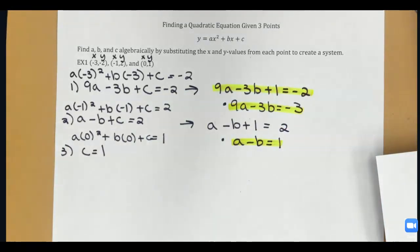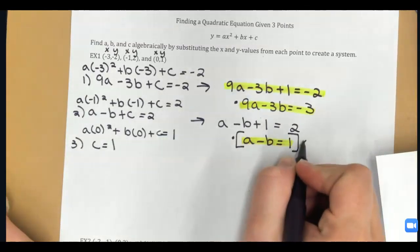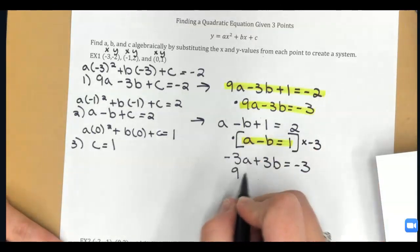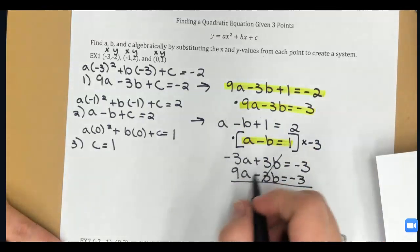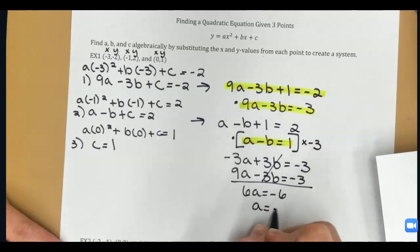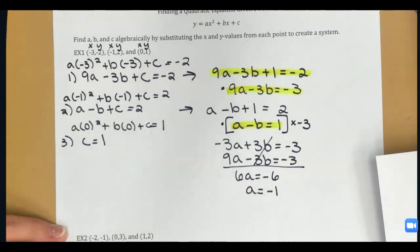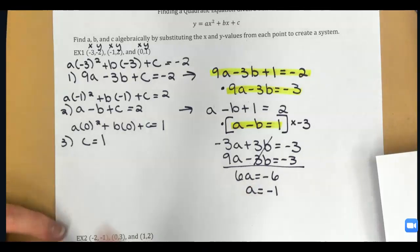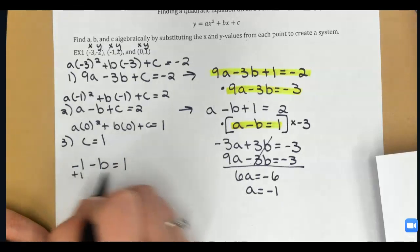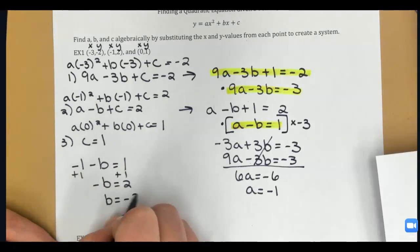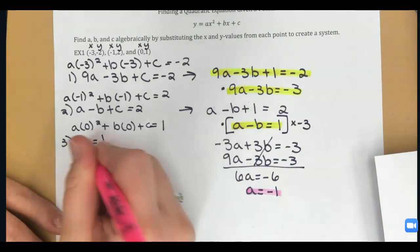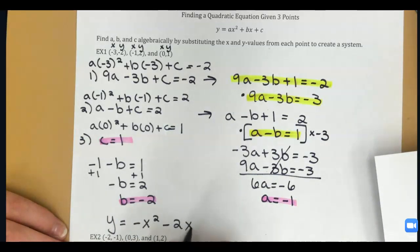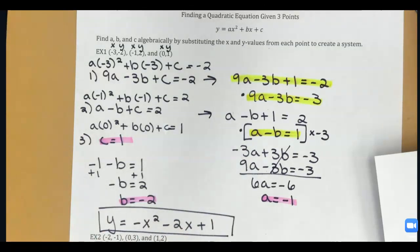I need to cancel one of my terms — let's cancel B. I'll multiply the second equation by negative 3, giving negative 3A plus 3B equals negative 3. Bringing down 9A minus 3B equals negative 3, the B's cancel and I get 6A equals negative 6, so A is negative 1. Now I plug A equals negative 1 into A minus B equals 1: negative 1 minus B equals 1, so B is negative 2. With A equals negative 1, B equals negative 2, and C equals 1, my equation is Y equals negative X squared minus 2X plus 1.